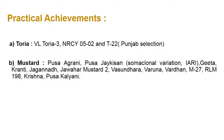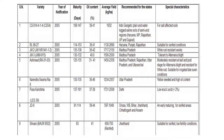Practical achievements in Toria: TL Toria 3, NRC 5-2, T22 (Punjab selection). In mustard: Pusa Agrani, Pusa Jai Kisan, Gita, Kranti, Jagannath, Jawahar Mustard 2, Vasundhara, Varuna, Vardhan, Krishna, and Pusa Kalani. A detailed list is available providing maturity duration, oil content, average yield, special characters, and state-wise recommendations. This includes both oil type and vegetable type varieties.